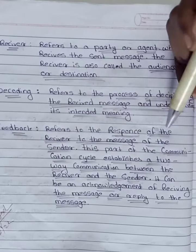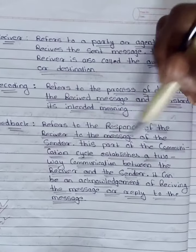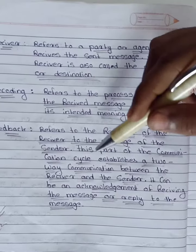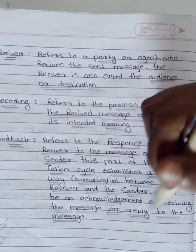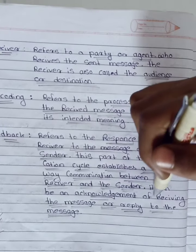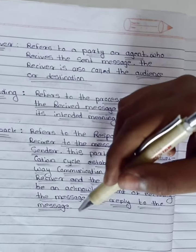Feedback refers to the response of the receiver to the message of the sender. This part of the communication cycle establishes a two-way communication between the receiver and the sender. It can be an acknowledgement of receiving the message or reply to the message. Thank you.